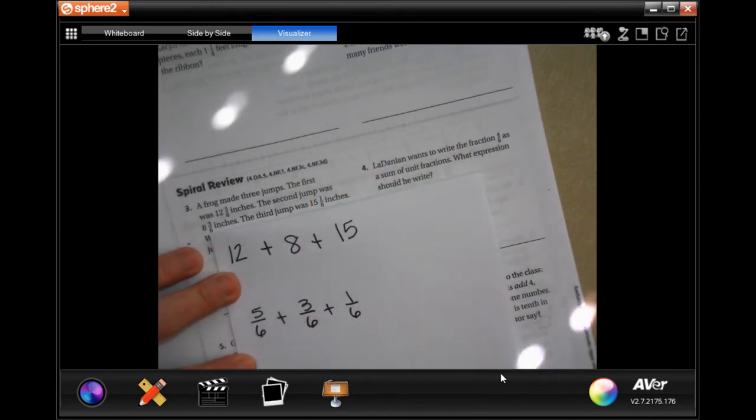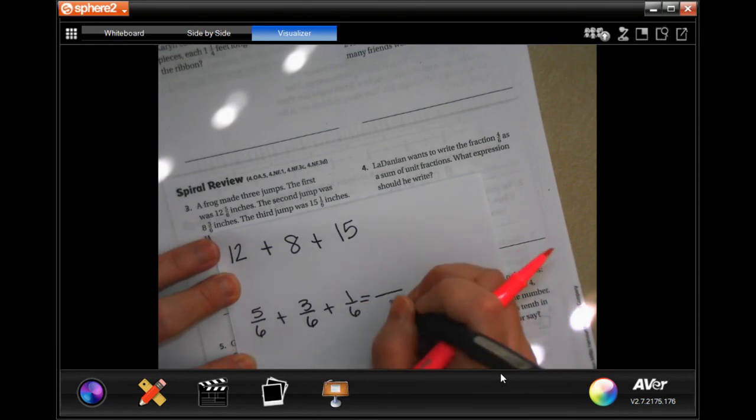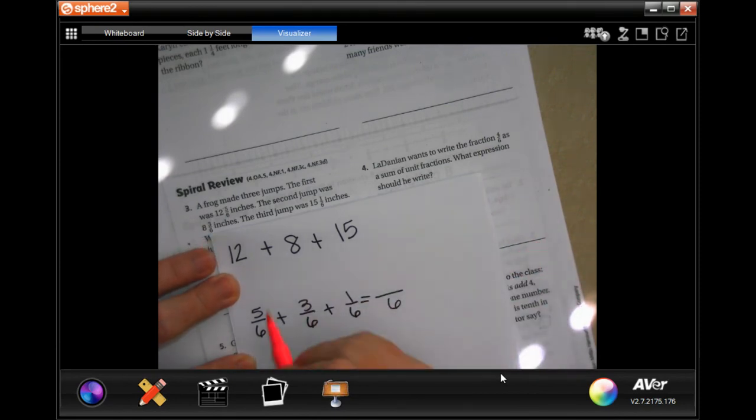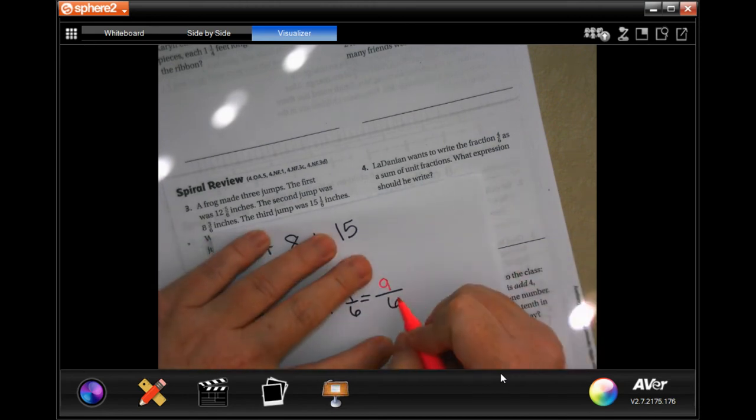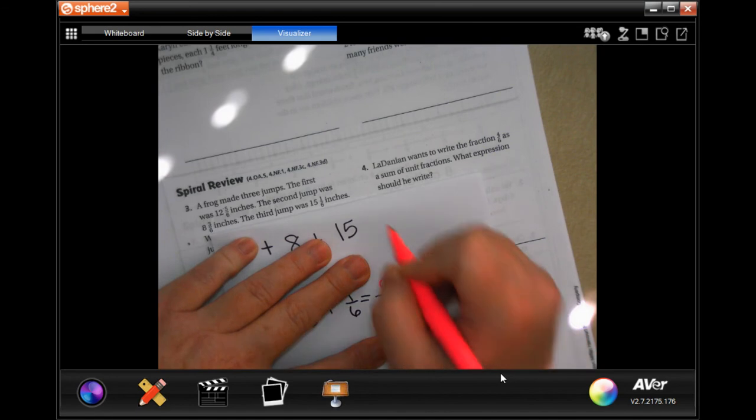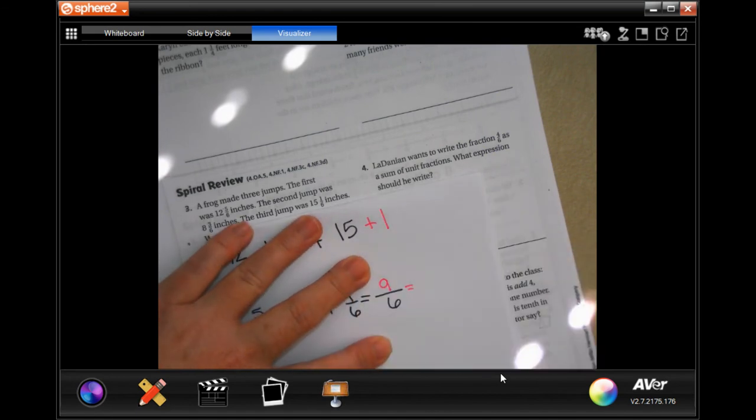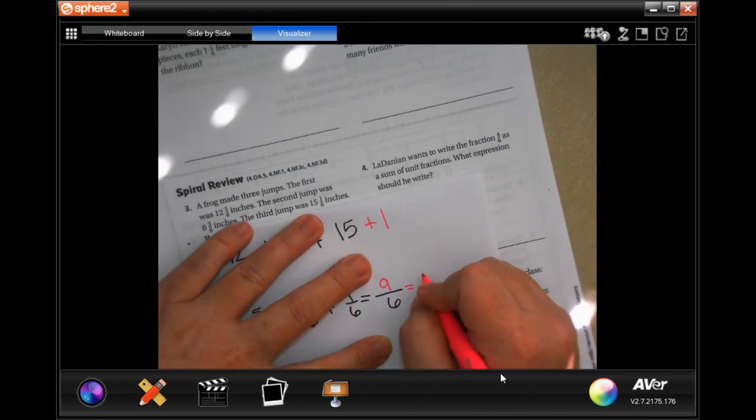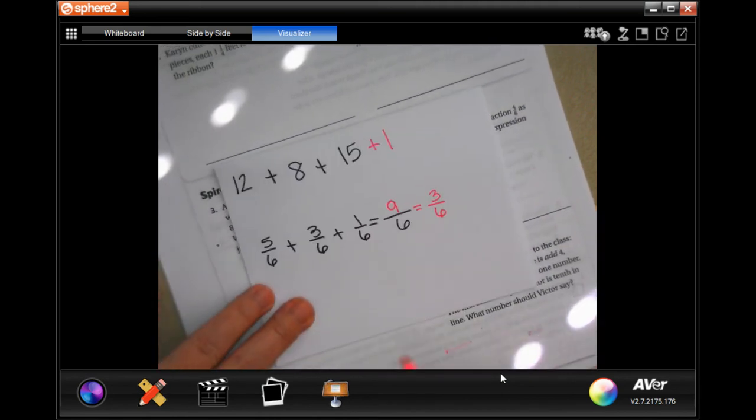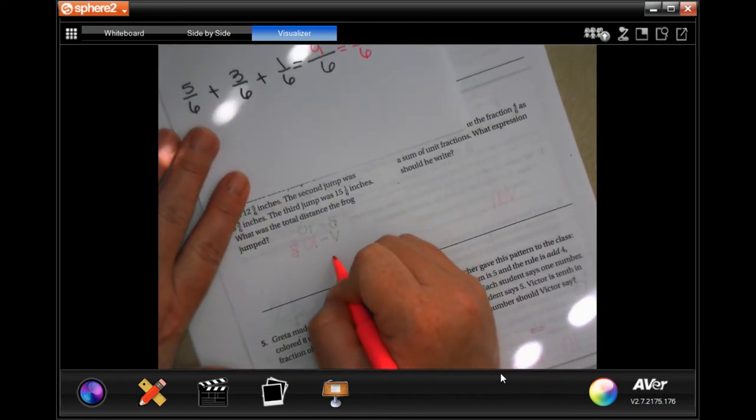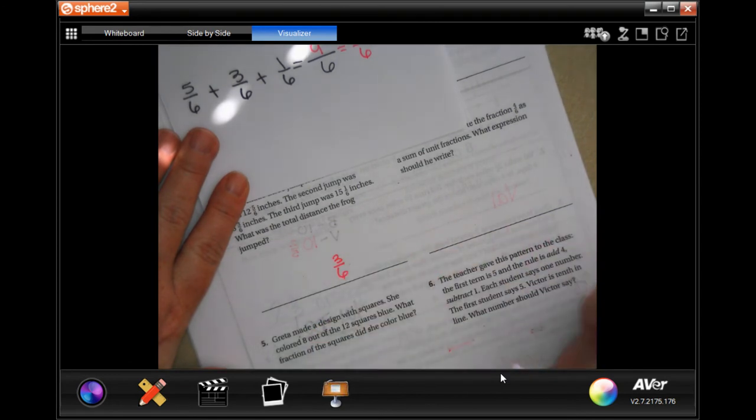We all know my denominator is going to stay 6. 5 plus 3 is 8, plus 1 more is 9. Well 6 goes into 9 one time. We'd have 3 left over and my denominator stays the same. So my fraction part is going to be 3/6.